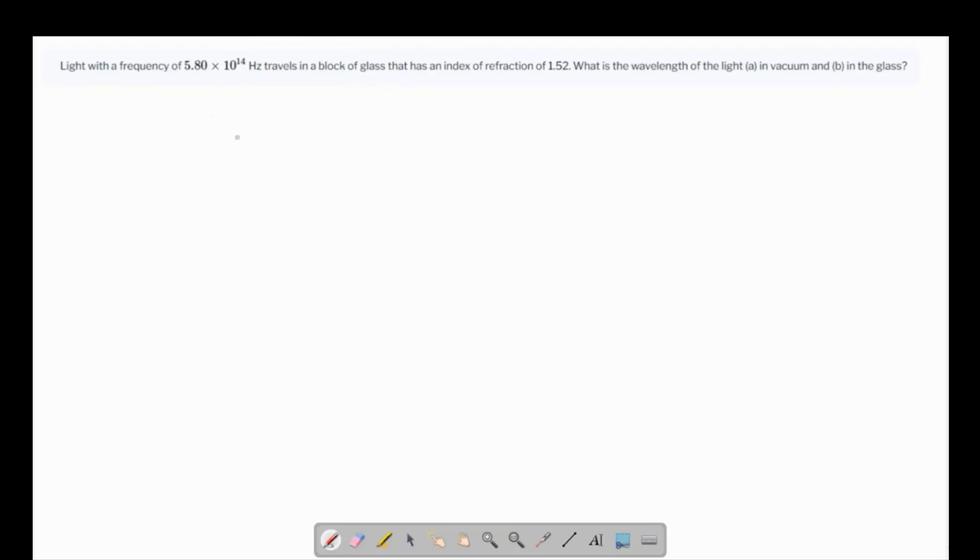So we know that there's a formula that refractive index n is given by the speed of light in vacuum, which is c, over the speed of light in that medium. From this we can find that the speed of light in that medium is c over n.